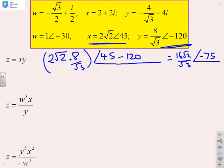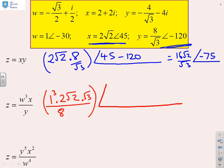What about the next one then? z equals w cubed x over y. So again, you'll remember from the earlier video that you can just write this result down by inspection. So w cubed, the modulus will be 1 cubed. x, the modulus is 2 root 2. And we're dividing by y, so we divide by the modulus of y. So we're dividing by 8 and multiplying by root 3. So there's the modulus of z. What about the phase?